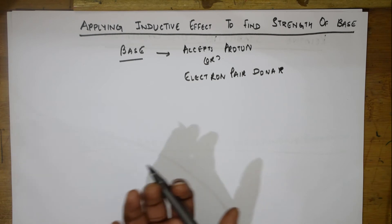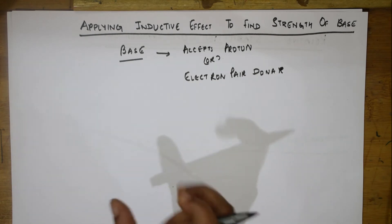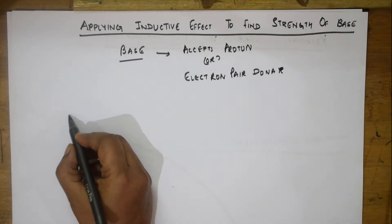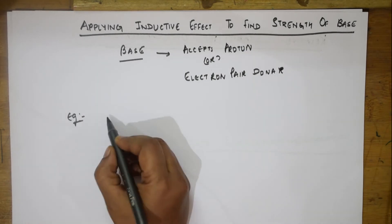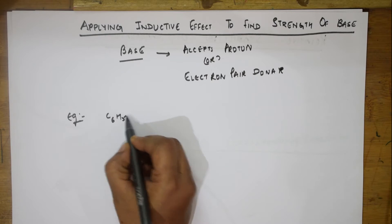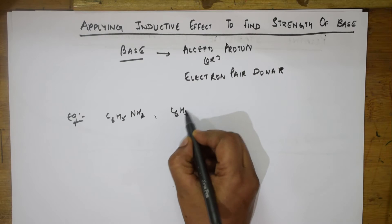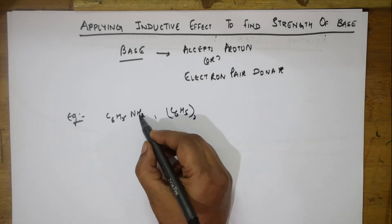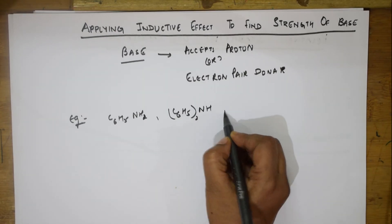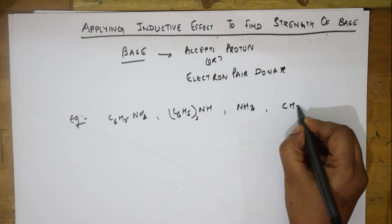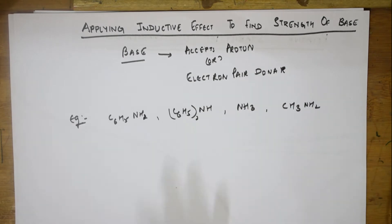Based on this concept, let us do certain examples. Suppose they ask you to arrange the following in order of basicity. We have C6H5NH2 (aniline), (C6H5)2NH (diphenylamine), ammonia (NH3), and CH3NH2 (methylamine). We are supposed to arrange these in decreasing order of basicity.